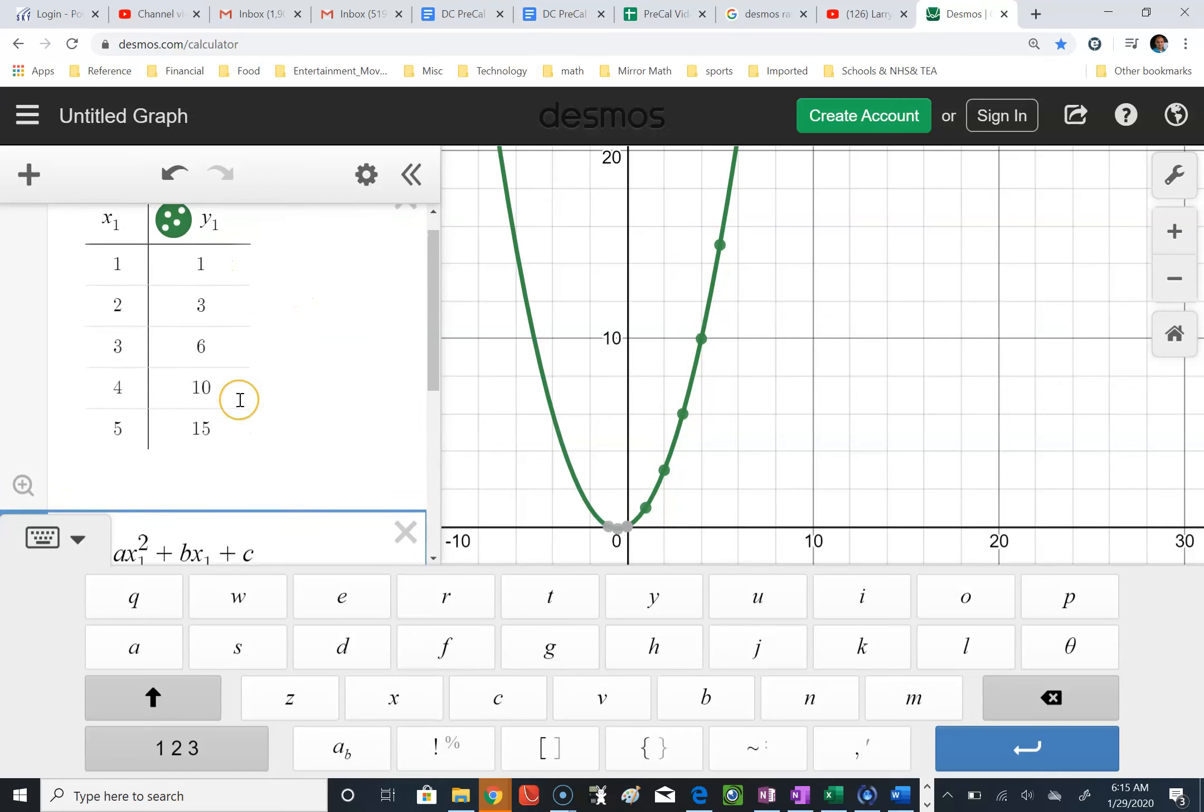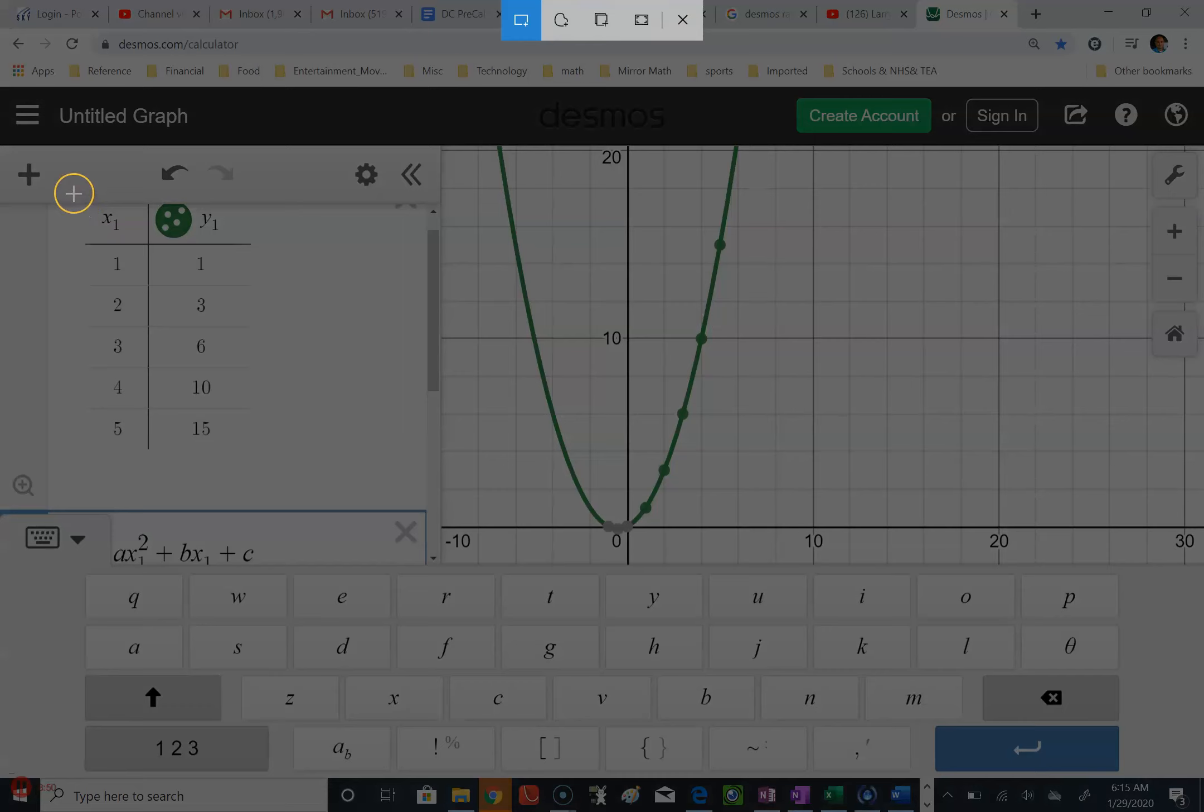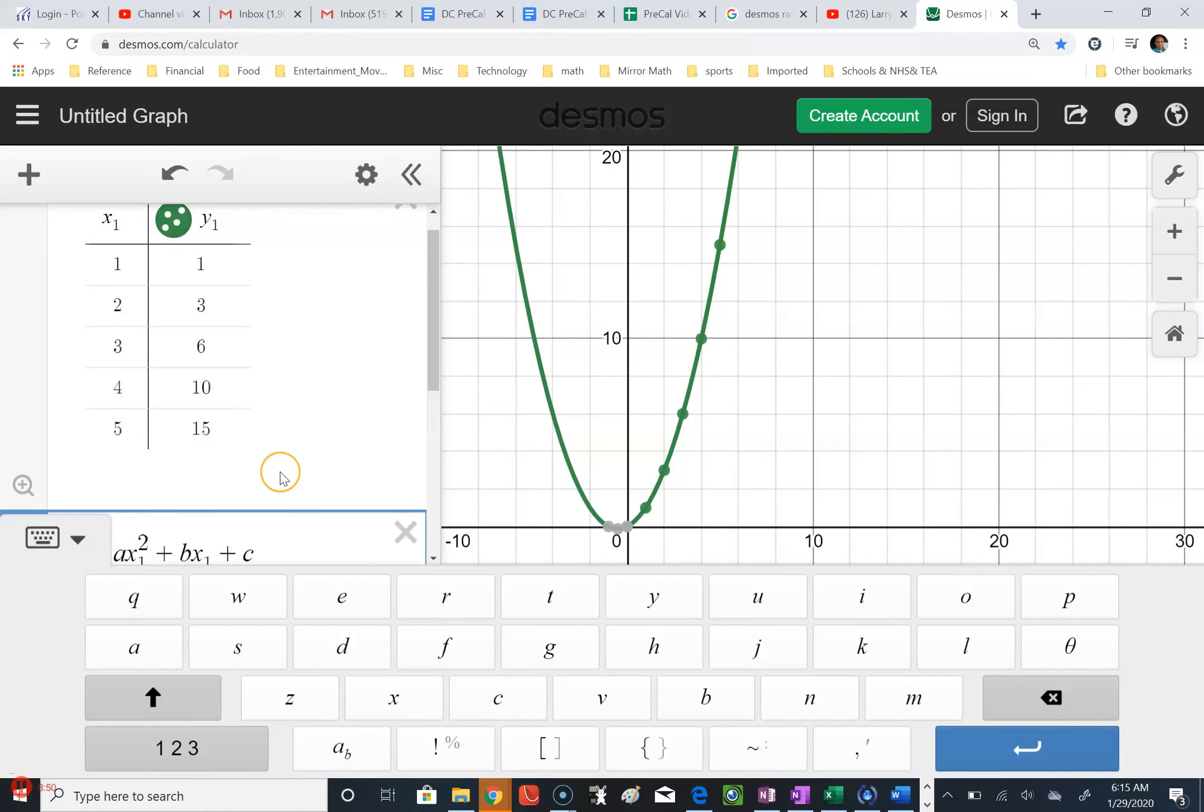If you're looking at the second differences here, 1 goes to 3, that's a change of 2. 3 goes to 6, change of 3. 6 goes to 10, change of 4. 10 goes to 15, change of 5. Looking at those second differences, I'm going to copy this into a... Why I didn't look at this originally, I don't know.